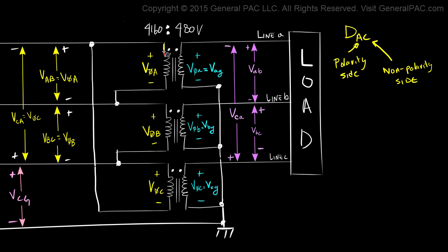Let's draw that over here. So what we're saying is that the polarity side of winding A is connected to the non-polarity side of winding C. And once you've defined that pattern,